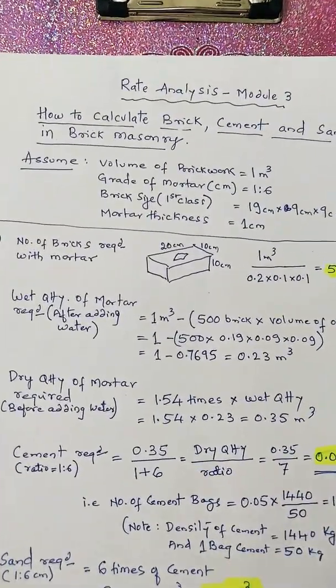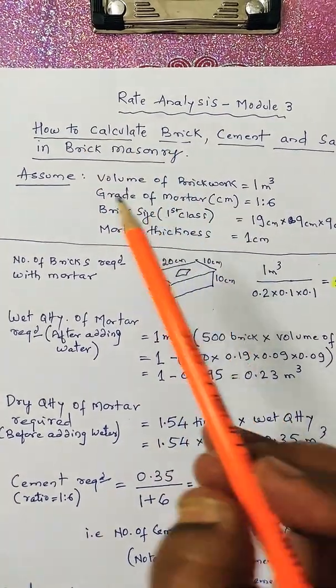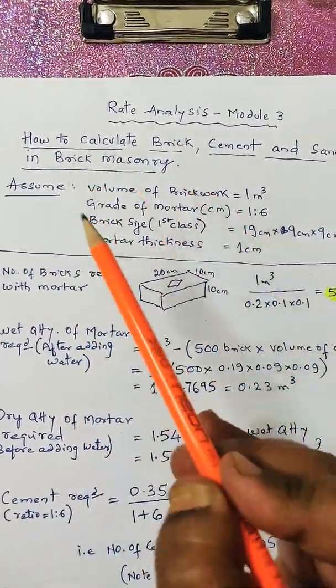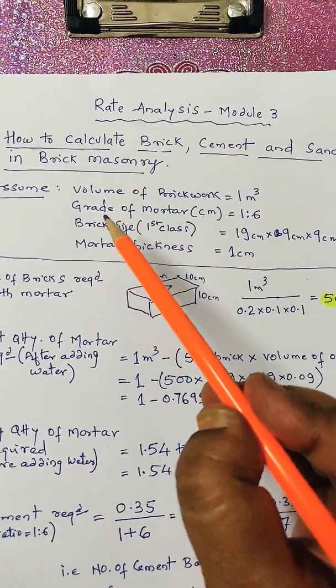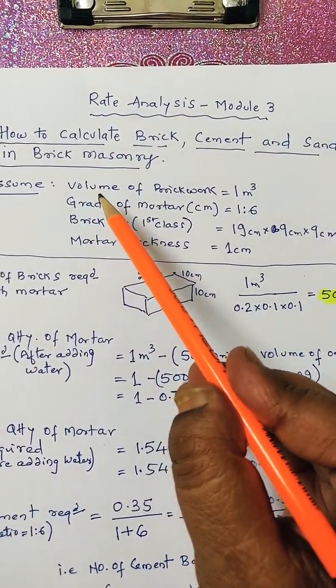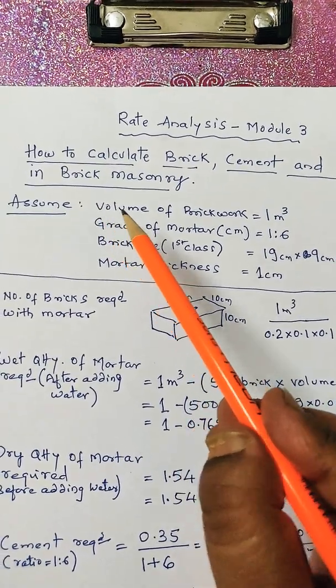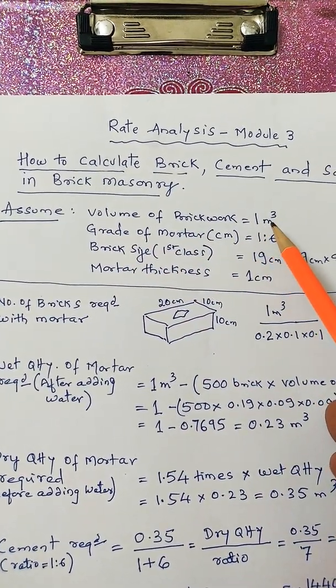So before starting let's assume the quantity of brickwork. In the quantity of brickwork, the volume of brickwork we shall take as 1 meter cube.